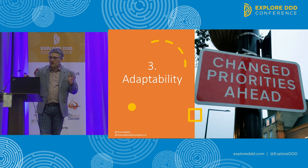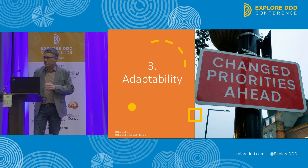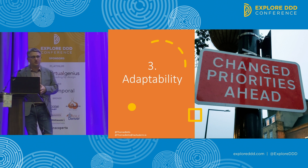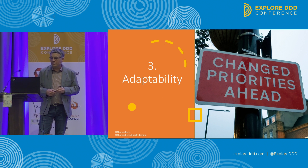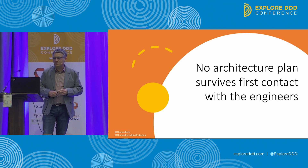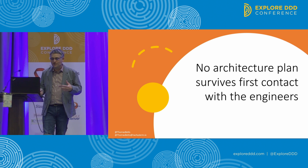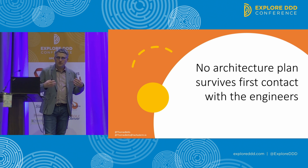So we've gotten through our first two superpowers. We have better communication because we know our audience, and we're making and communicating our decisions better because we're using ADRs. The third skill for leveling up is adaptability, because planning is really important, but nothing ever goes exactly as planned. The Agile Manifesto describes this as responding to change over following a plan.